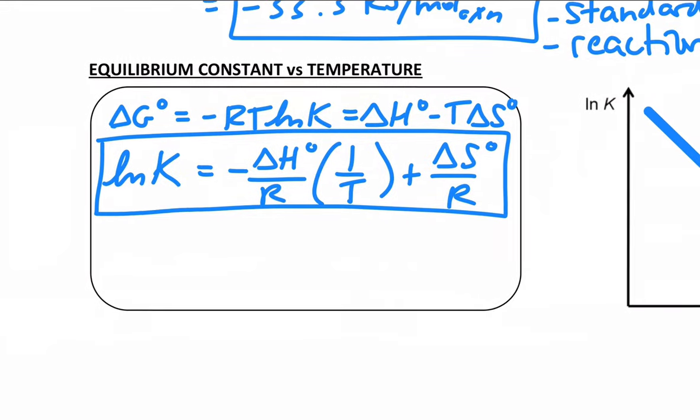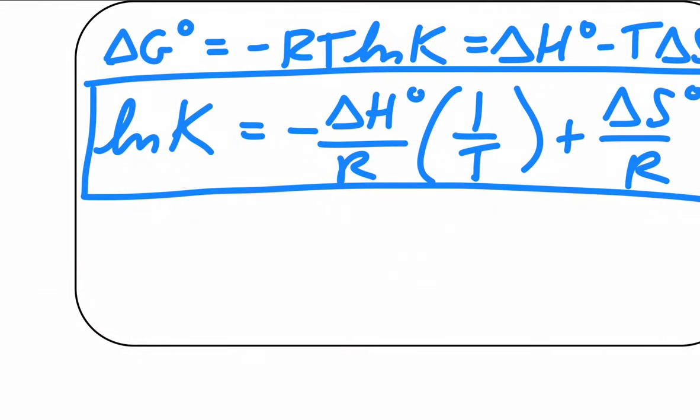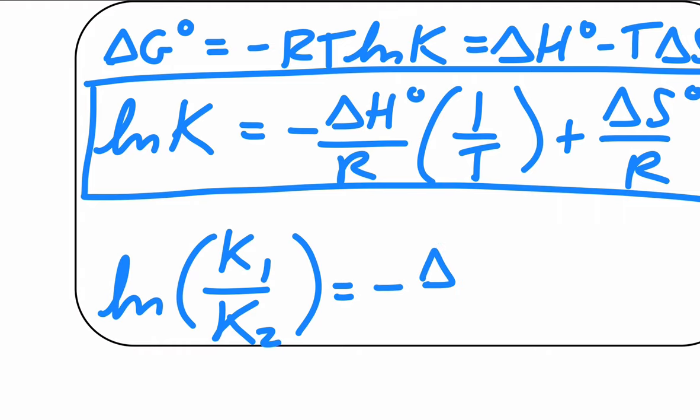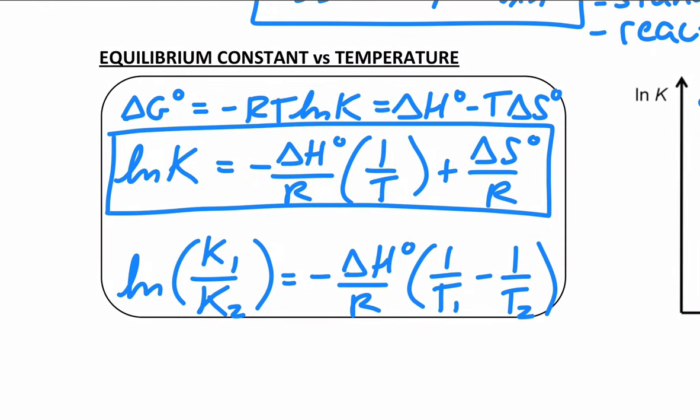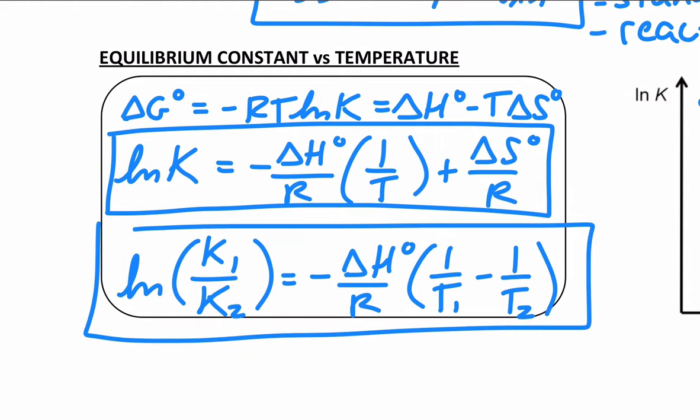We're going to do a lab that uses this and studies how the equilibrium constant varies with temperature. You could actually rearrange this expression if you wanted to for two different equilibrium constants. The natural log of K1 over K2 is equal to negative change in enthalpy over R times the difference in the inverse temperature. Temperature is one over T1 minus one over T2. That's a useful expression that gets rid of the change in entropy. So both of these expressions work.